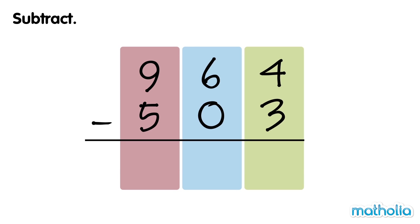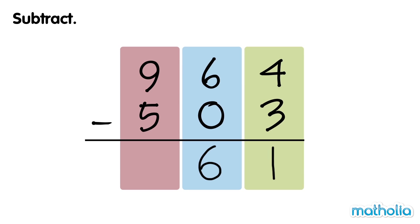Subtract. Let's find 964 minus 503. Start by subtracting the ones. 4 ones minus 3 ones equals 1 one. Next, subtract the tens. 6 tens minus 0 tens equals 6 tens. Now subtract the hundreds. 9 hundreds minus 5 hundreds equals 4 hundreds. 964 minus 503 equals 461.